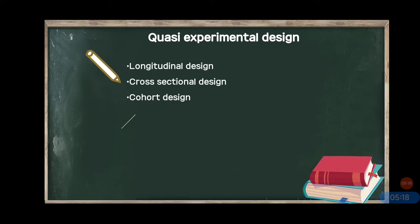Next is cohort design. Cohort means group. Cohort design is the mixture of longitudinal and cross-sectional, and it is also called cross-sequential. Suppose you have to see whether smoking leads to lung cancer.